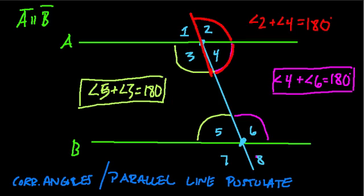And I went over the corresponding angles in another video, but here we can say that 2 does correspond to 6. Just like 4 corresponds to 8, 3 corresponds to 7, and 1 corresponds to 5. They're corresponding, and what the parallel line postulate says is that corresponding angles are equal.